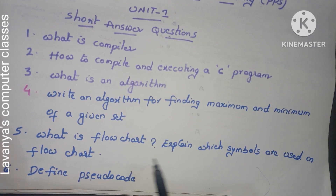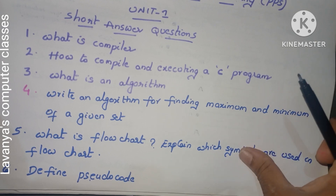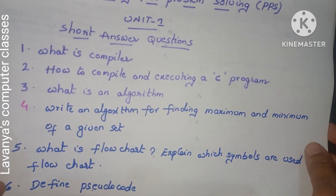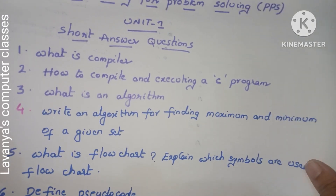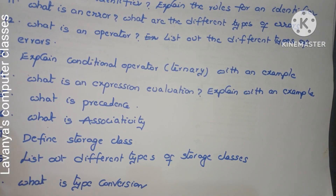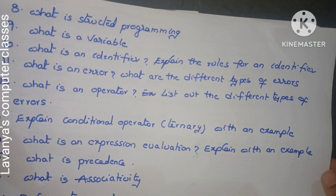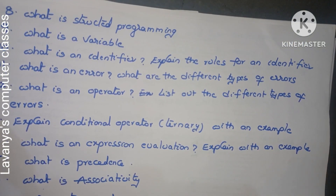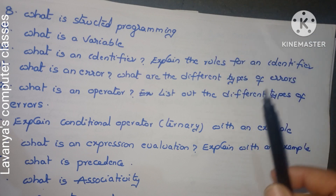Fifth: what is a flowchart? Explain which symbols are used in a flowchart. Sixth: define pseudocode — algorithm, flowchart, and pseudocode are all examples of ways to represent and solve a problem. And the next question: what is structured programming? Up to this point, all are introduction questions about computers and programming languages.